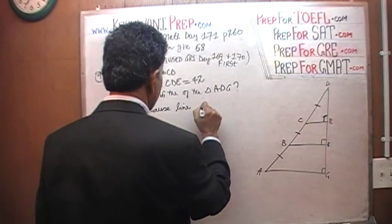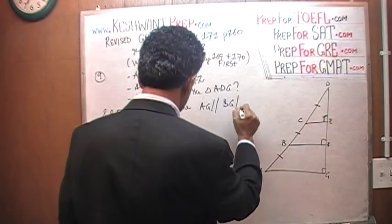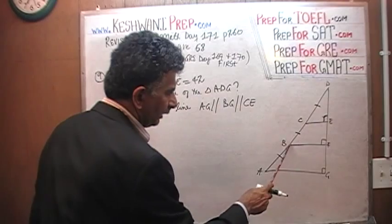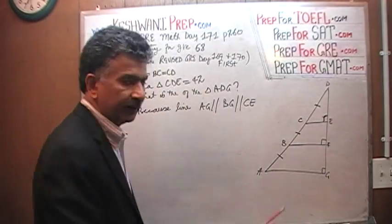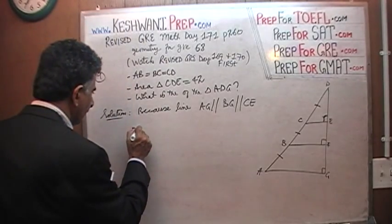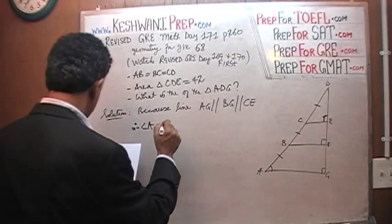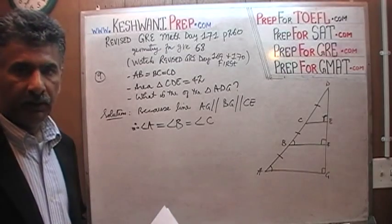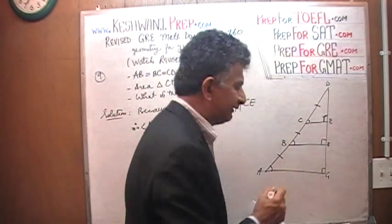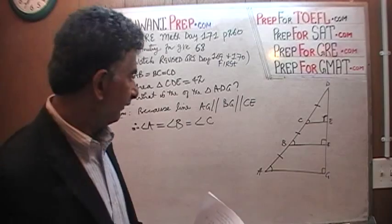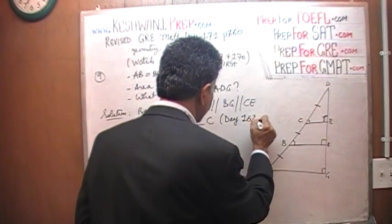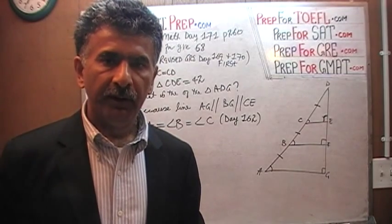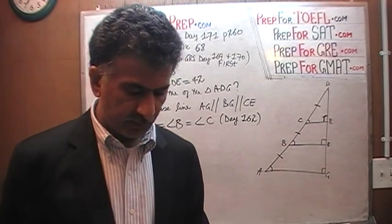Because line AG is parallel to BF, which is parallel to CE — these are three parallel lines — therefore angle A equals angle B, which equals angle C. If you are wondering why these three angles must be equal just because the three lines are parallel, that is something we learned on day 162, where we covered what happens to angles when two parallel lines are intersected by a third line. Line AD intersects the three parallel lines, so angle A, angle B, and angle C must all be equal.